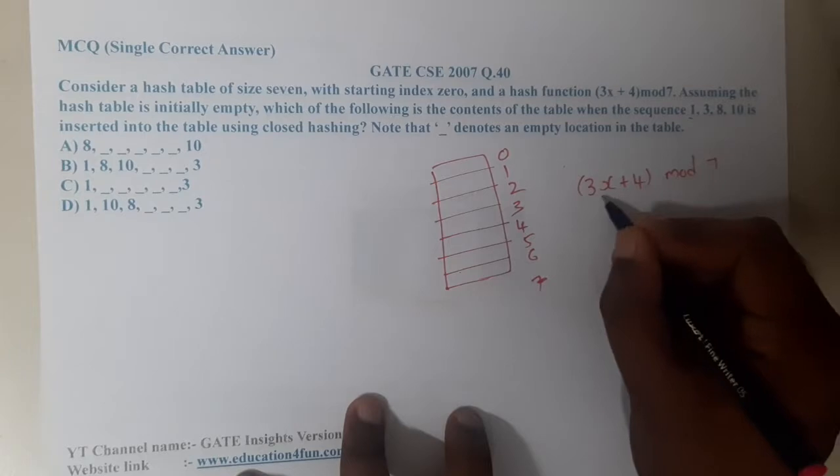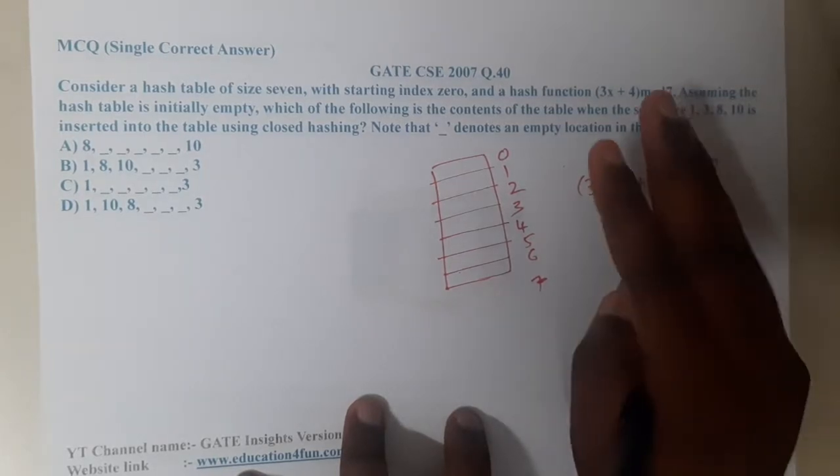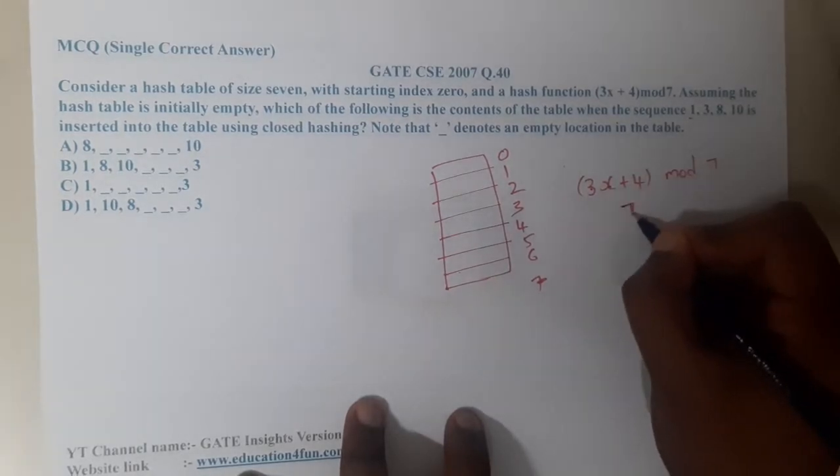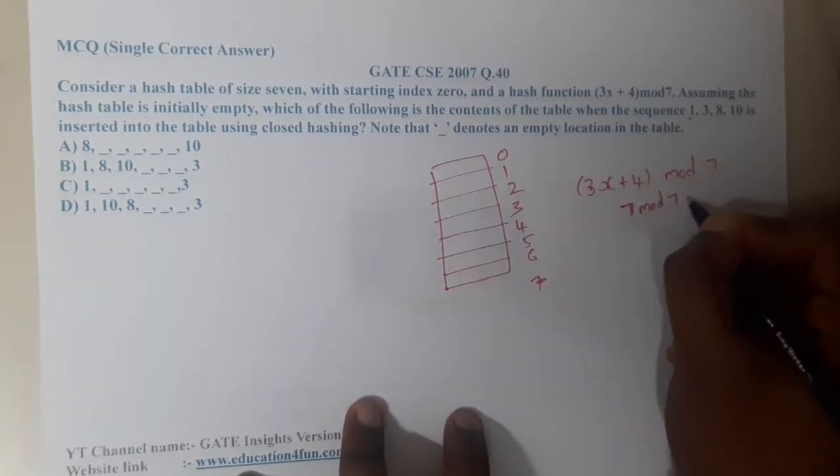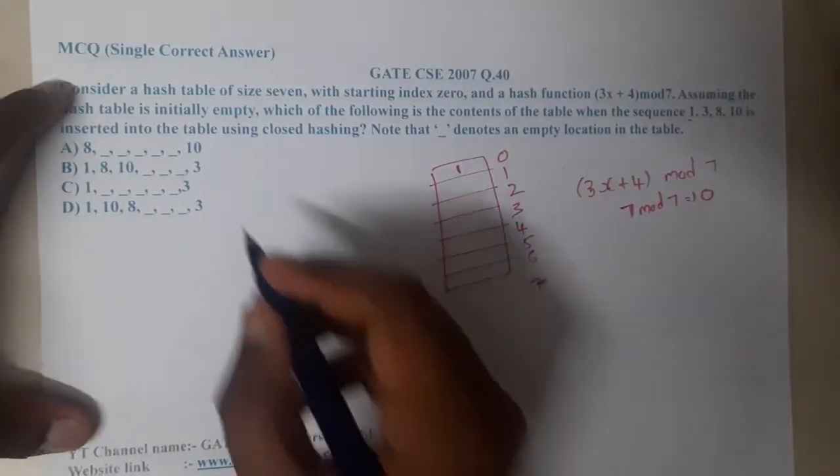What is A? If you substitute 1 here, 3 times 1 is 3, plus 4 is 7. 7 mod 7 is 0, so at position 0, 1 will be placed. Which options are eliminated? Option A is eliminated completely.